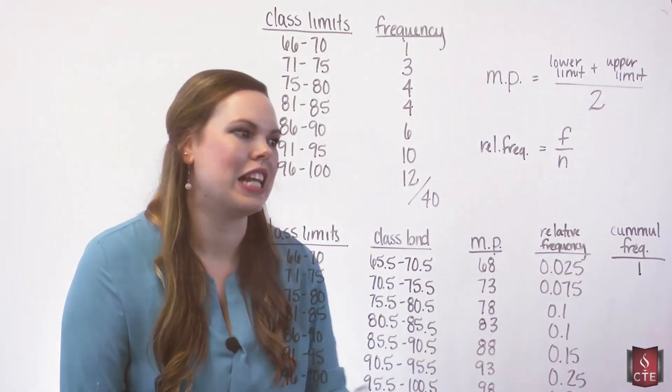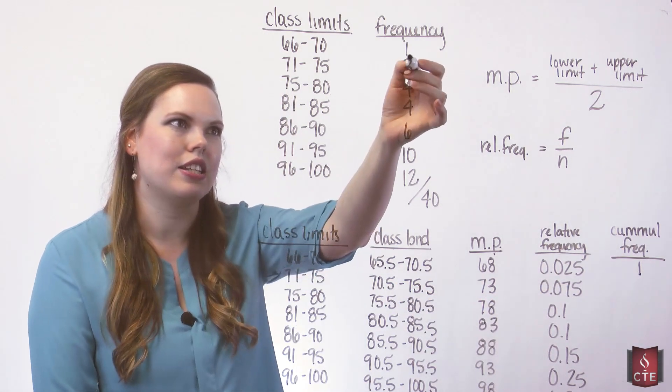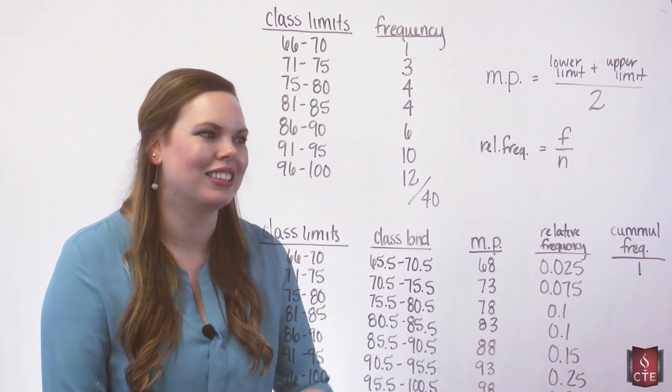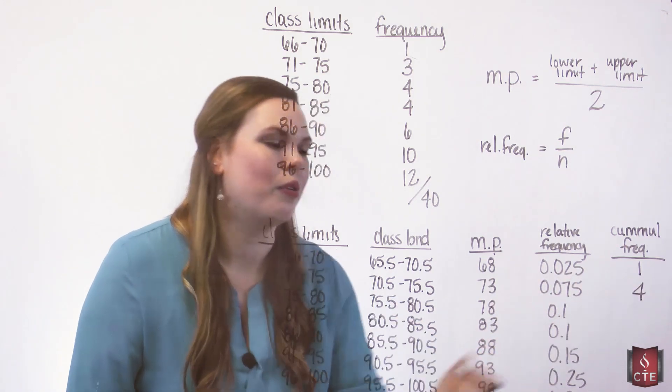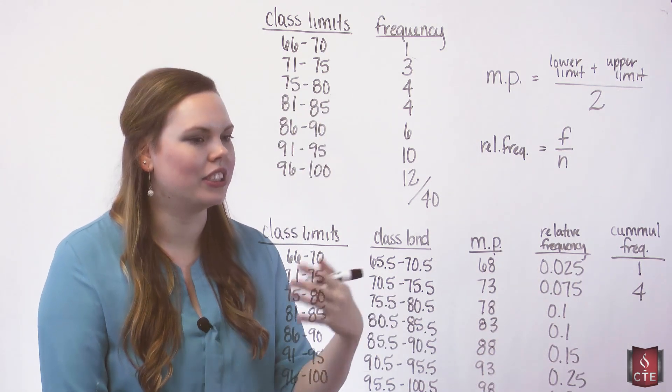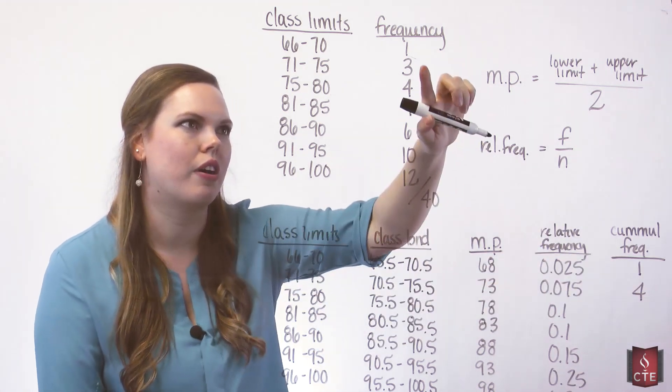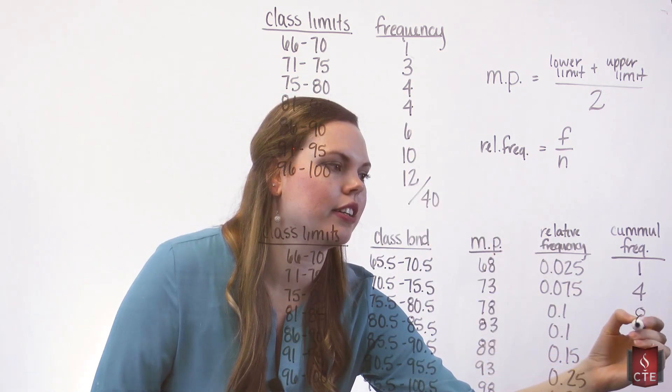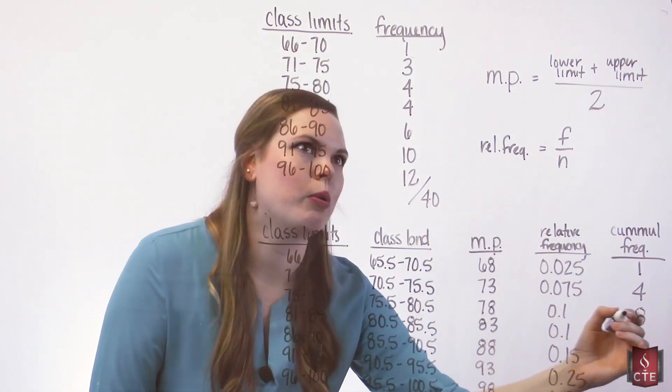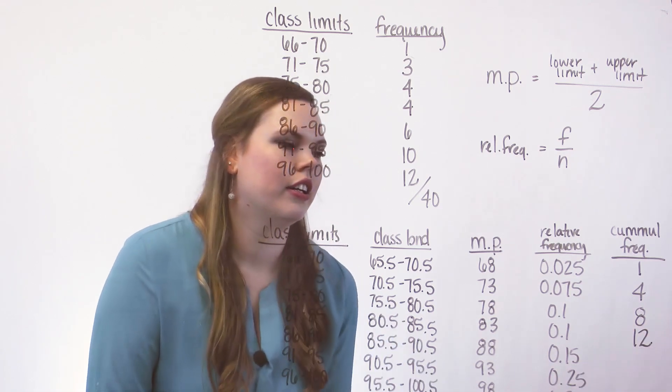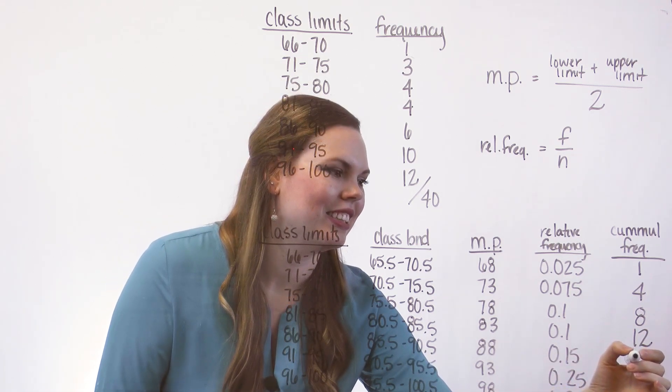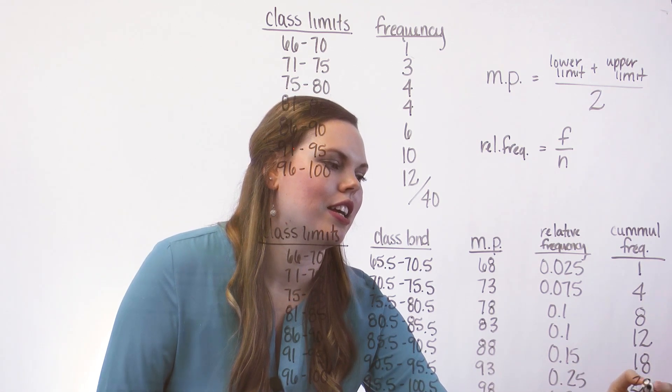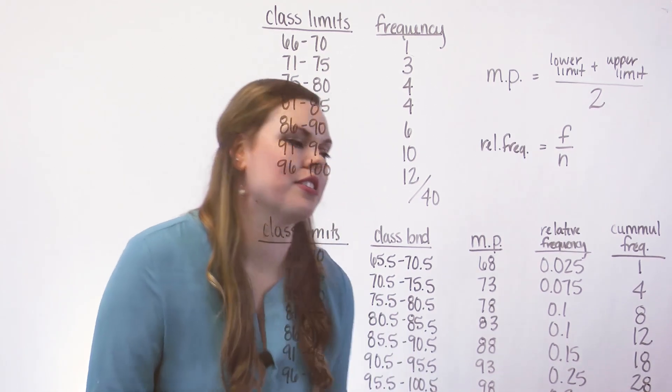But as we move to the next class, now we've accumulated these 3 data points, but also the 1 from the previous class. So it's going to be 4. Move on to the next class. I have 4 that I've accumulated so far from the 1 and the 3. And now I'm accumulating 4 more. So I have 8. Cumulating 4 more in the next class, so now I have 12. Cumulating 6, so now I have 18. Then 10, so 28. And then 12. And this should add up, and it does to 40.